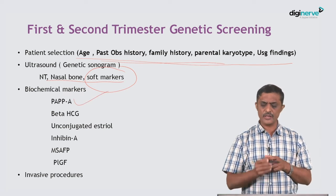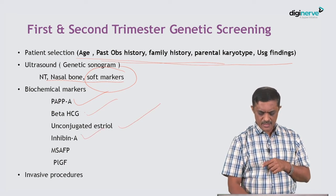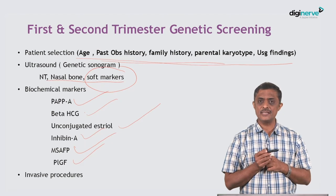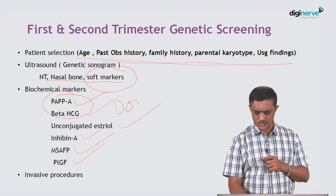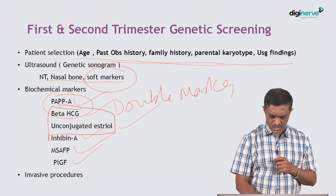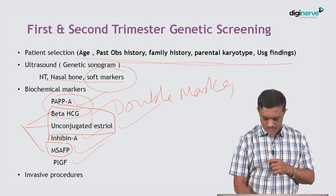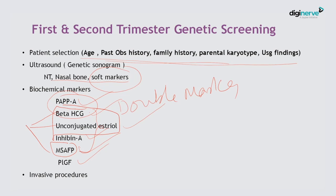Biochemically, you look for pregnancy-associated plasma protein A (PAPP-A), beta-HCG, unconjugated estriol, inhibin A, maternal serum alpha fetoprotein (MSAFP), and placental growth factor. These markers assess the risk of aneuploidy. PAPP-A and beta-HCG together constitute the double marker. Beta-HCG, unconjugated estriol, and MSAFP constitute the triple marker. All four — beta-HCG, unconjugated estriol, inhibin A, and MSAFP — constitute the quadruple marker. These can also be confirmed by invasive procedures.